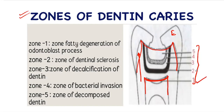Zone 2 is the zone of dentinal sclerosis. Zone 3 is the zone of decalcification of dentine. Zone 4 is the zone of bacterial invasion, and then zone 5 is the zone of decomposed dentine.